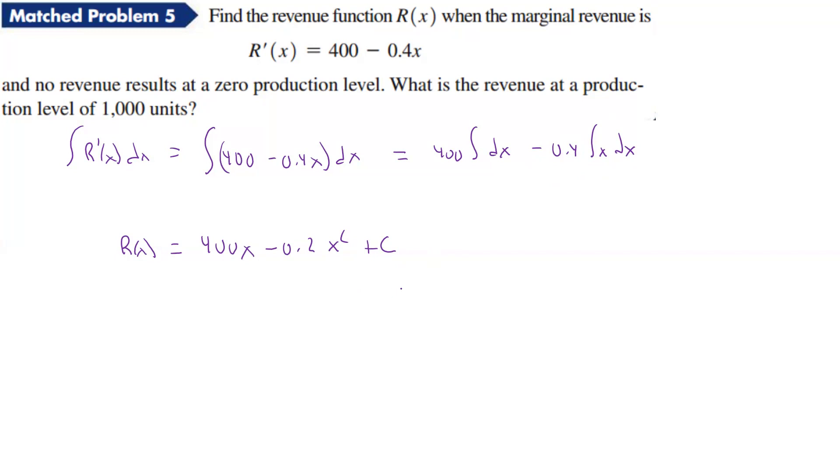Now it says no revenue results at a 0 production level, so if x is 0, then revenue is 0, so that means 0 equals 400 times 0 minus 0.2 times 0 squared plus c. Well, that's 0, that's 0, so that means c is equal to 0, and so our r of x truly then is just 400x minus 0.2x squared.